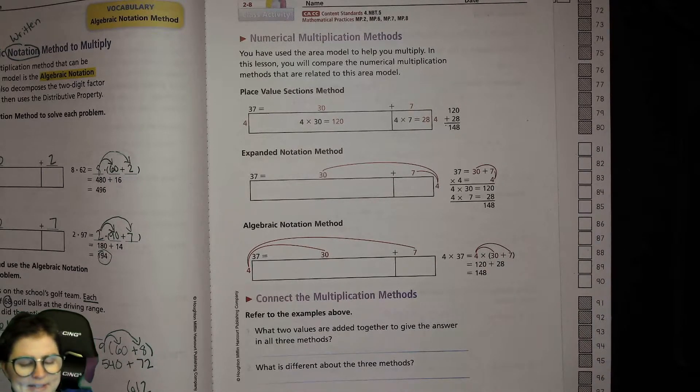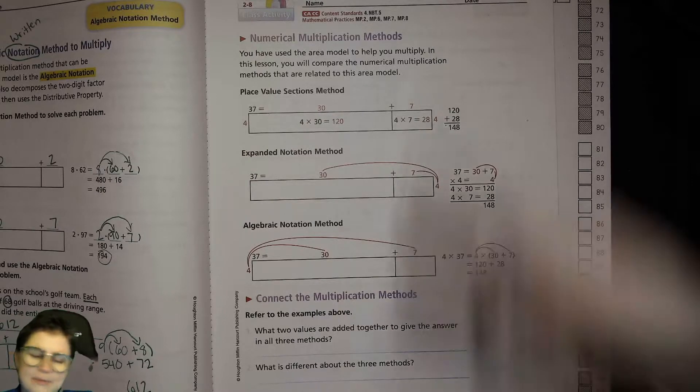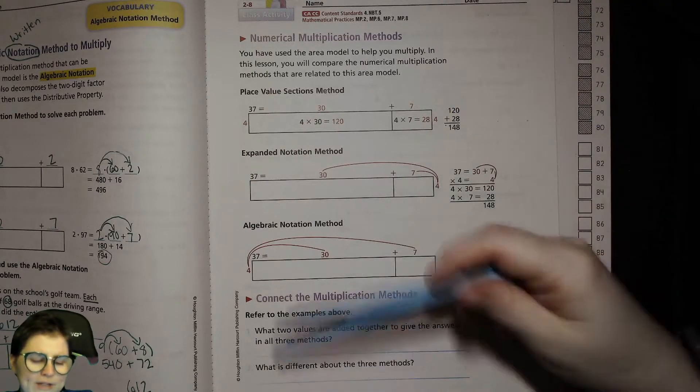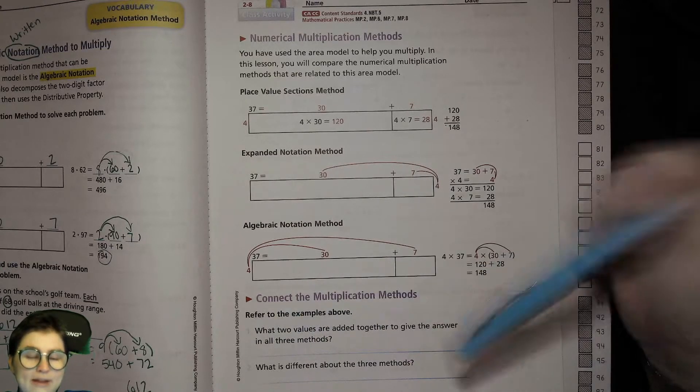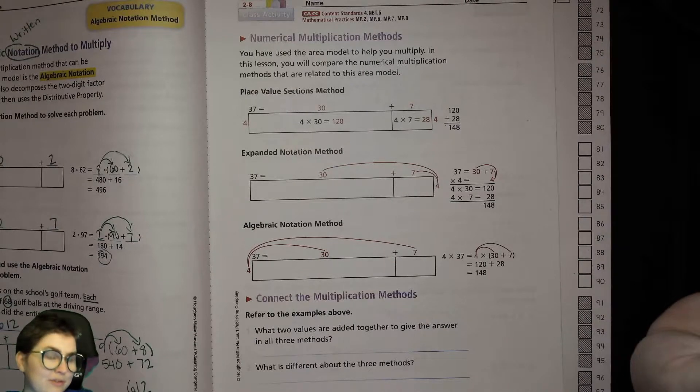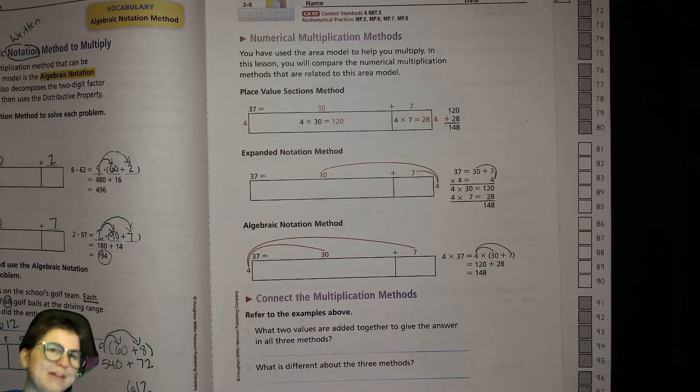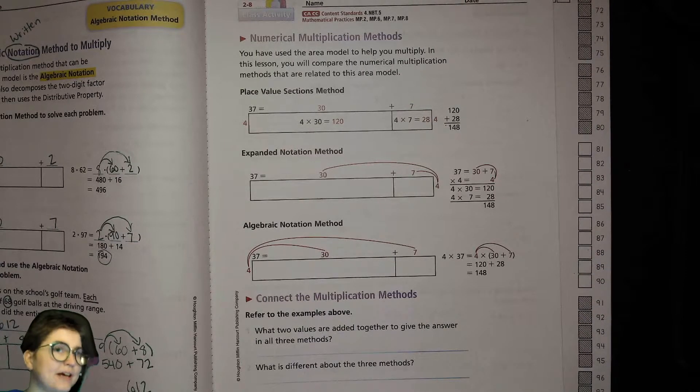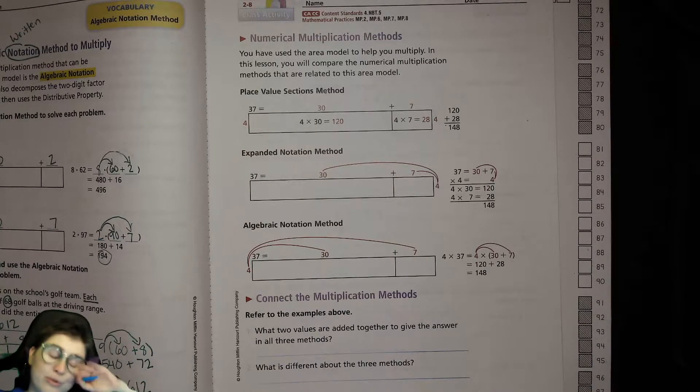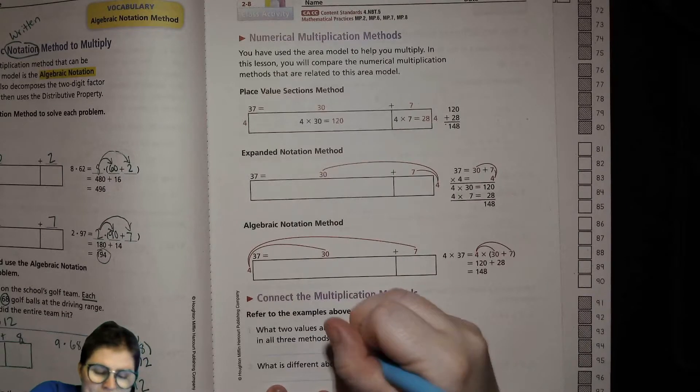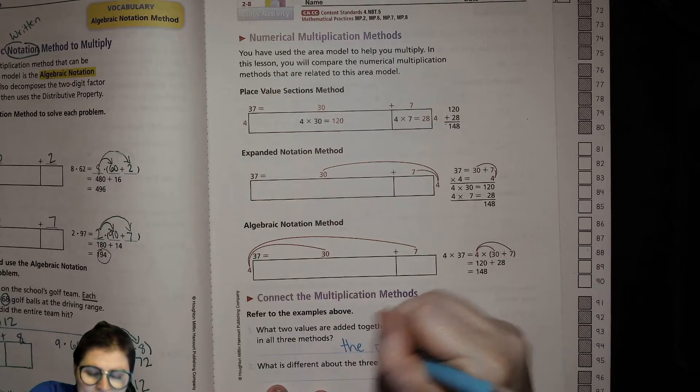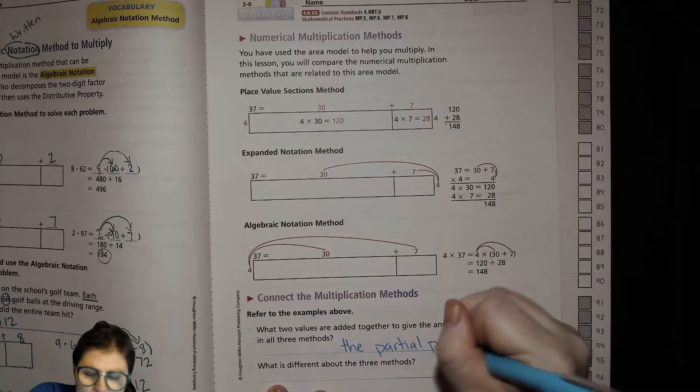Now we're going to connect these multiplication methods. Refer to the examples above. What two values are added together to give the answer in all three methods? What do we call those? I mentioned them a few times already. It's not the full product. It's the partial product, right? A piece of the full product. So the partial products.